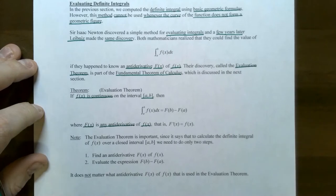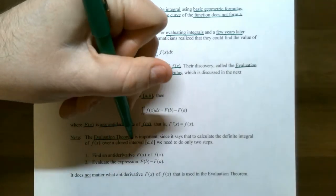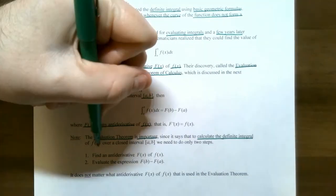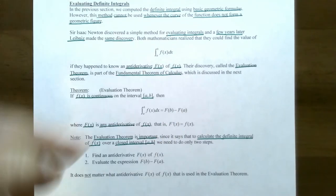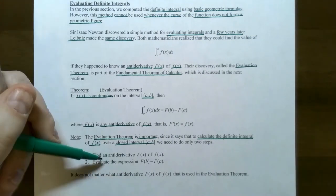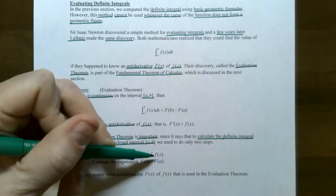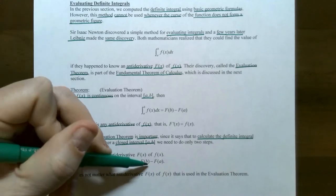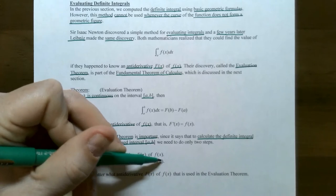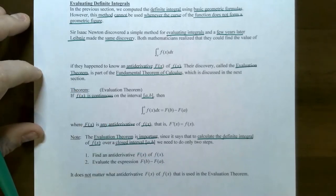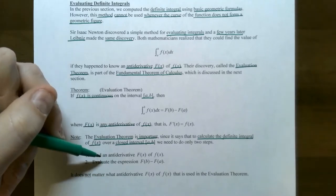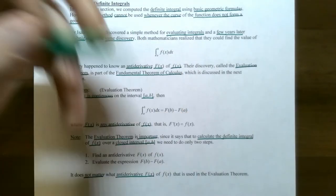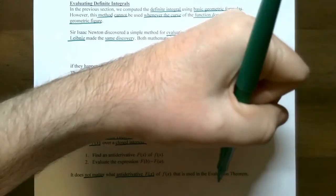There are a couple of steps with the evaluation theorem, and why it's so important is that it tells you a very simple way to calculate the definite integral of a function over a closed interval by just doing two steps. First, find an antiderivative capital F of x of the integrand. Once you have an antiderivative, evaluate the expression at the upper limit of integration first, the lower limit of integration second, and subtract them in that order — F of b subtract F of a. Keep in mind, it does not matter which antiderivative capital F of x of the integrand you use in the evaluation theorem.